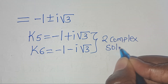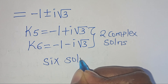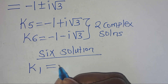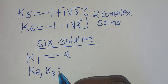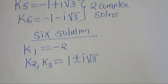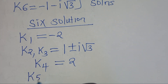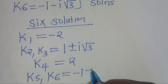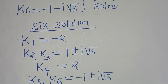These are two complex solutions, and k4 is 2. This totals to six solutions to this exponential problem. So we have k1 equal to minus 2, k2 and k3 equal to 1 plus or minus i square root of 3, k4 equal to 2, and k5 and k6 equal to minus 1 plus or minus i square root of 3. These are the solutions to this exponential problem. We have two real solutions and four complex solutions.